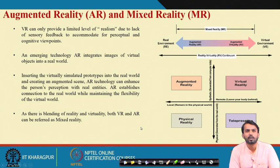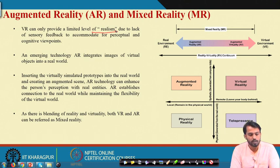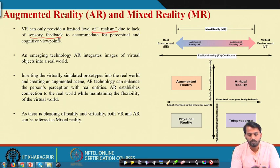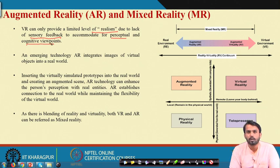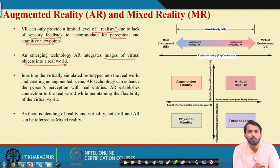Now let us see what augmented reality and mixed reality are. VR involves a limited level of realism due to lack of certain sensory feedback, so perceptual and cognitive viewpoints are not fully accommodated. This is overcome by augmented reality, an emerging technique that integrates images of virtual objects into the real world — inserting virtually simulated prototypes into the real world and creating an augmented scene that enhances the person's perception with real entities.